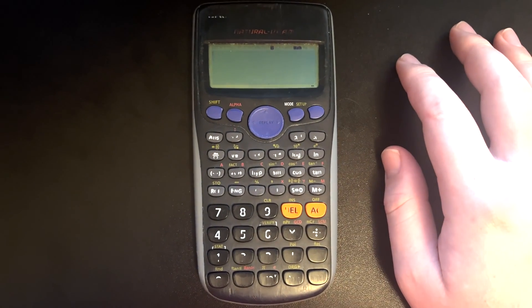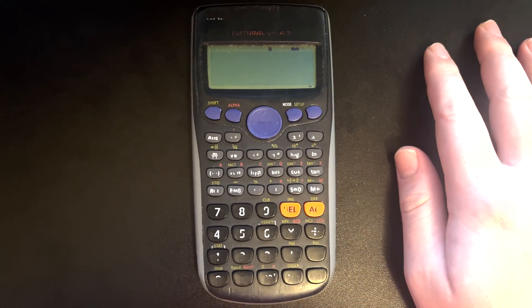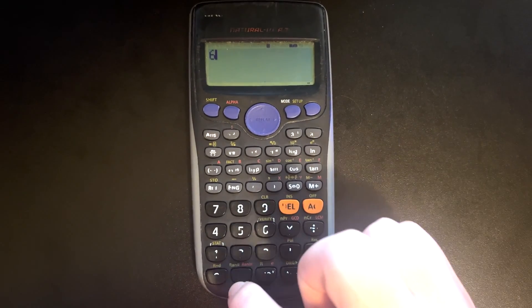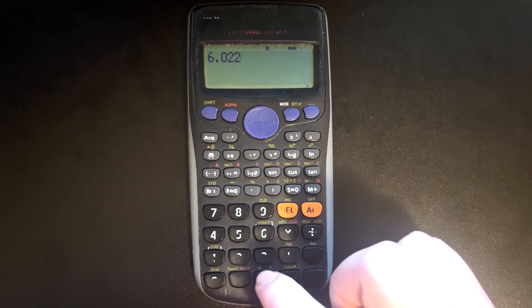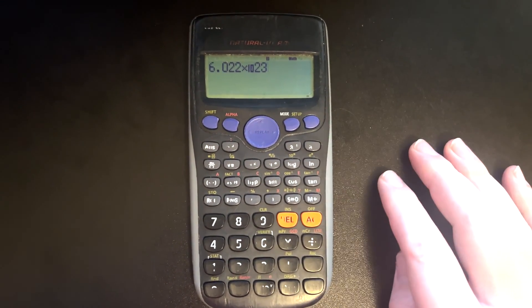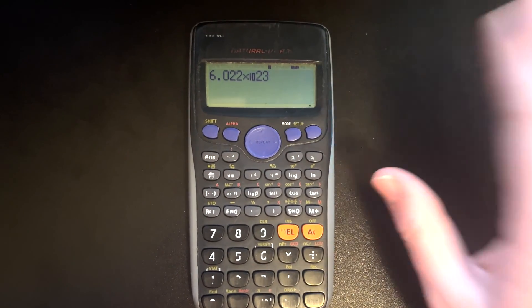Okay, so the first thing we'll do is turn our calculator on and input the number that we want to save for later use. I'm going to put in Avogadro's number, 6.022 times 10 to the 23.